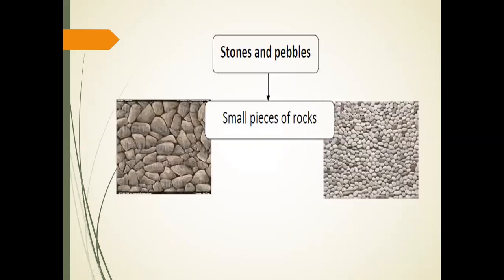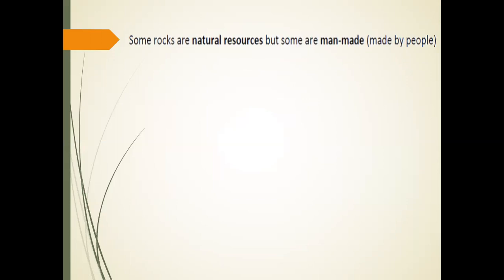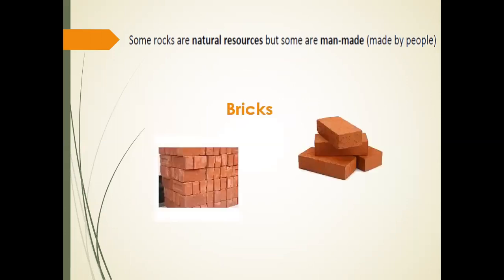We are going to continue with stones and pebbles — all of us know them. They are small pieces of rocks. So when you see stones and pebbles in a practice worksheet or quiz, remember they are a kind of rock — small pieces of rocks. The last thing we said is that all of those are natural resources, found on the surface of the earth, found in nature, created by God. But some are man-made — and those are the bricks.